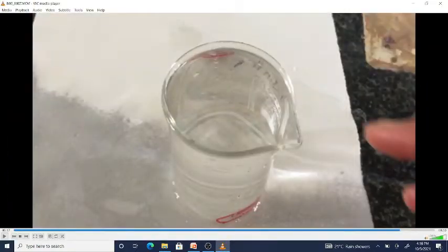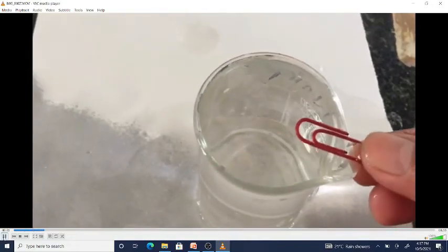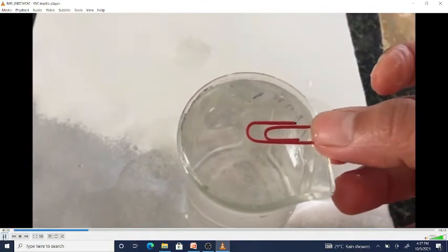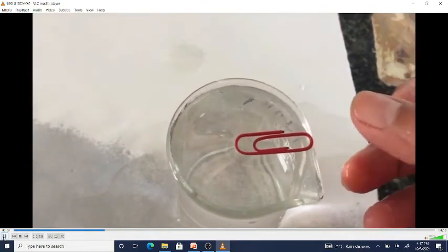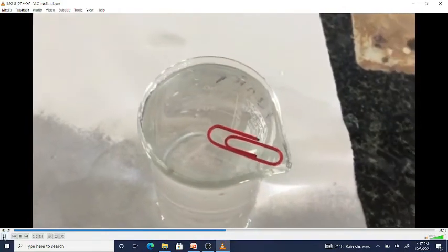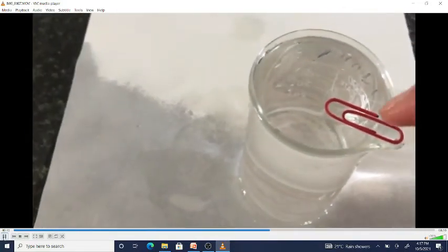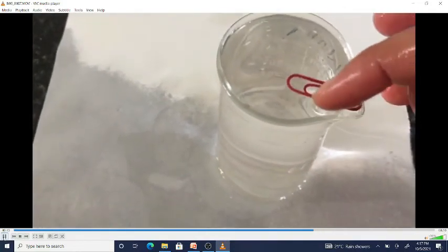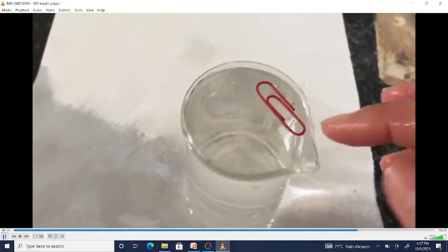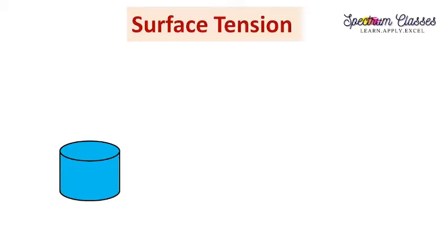Here you can see a paper clip is sunk in the beaker — this suggests its high density. But if I put this clip slowly on the surface of the water, it starts floating. How does this occur? How can small objects of certain shapes float over the surface of water?